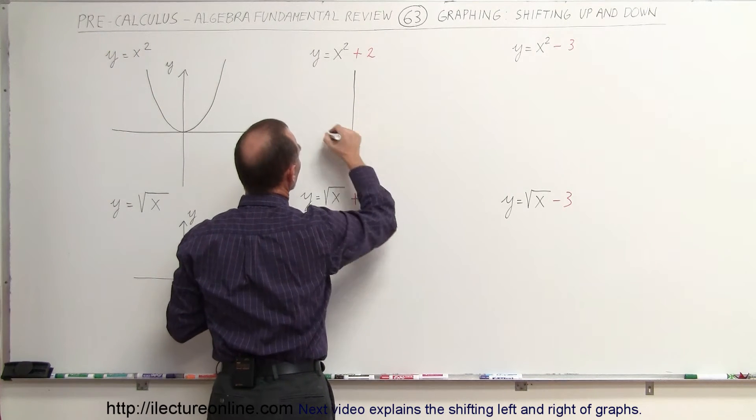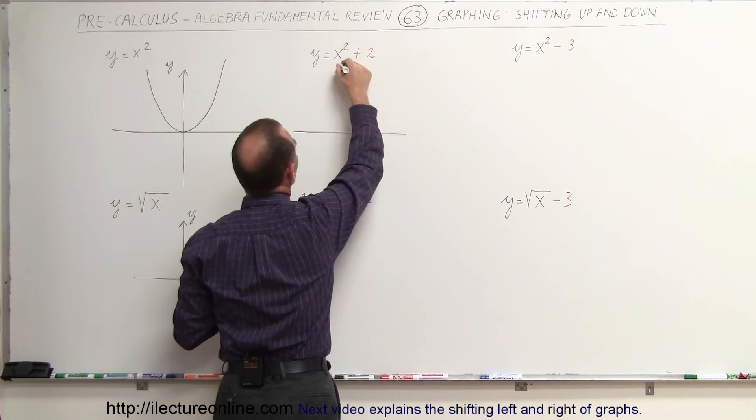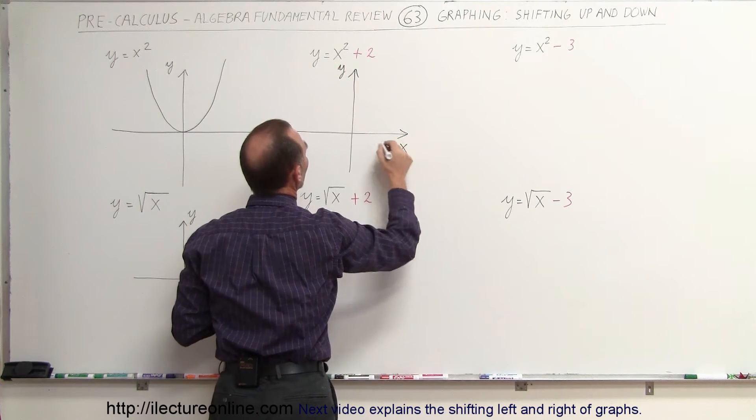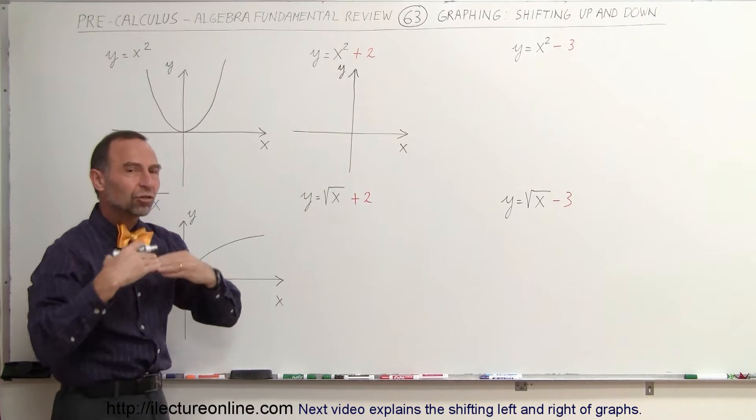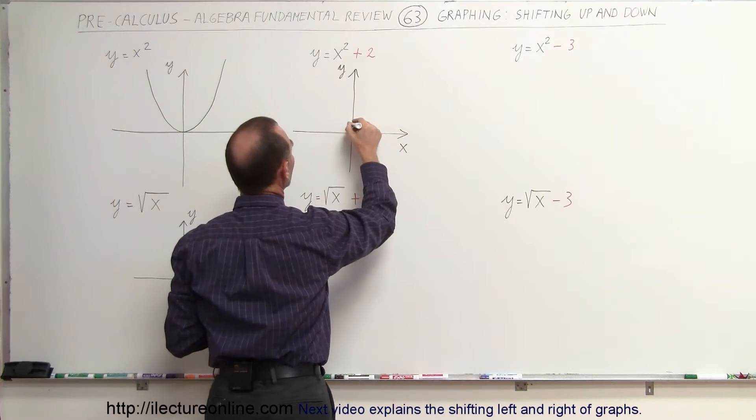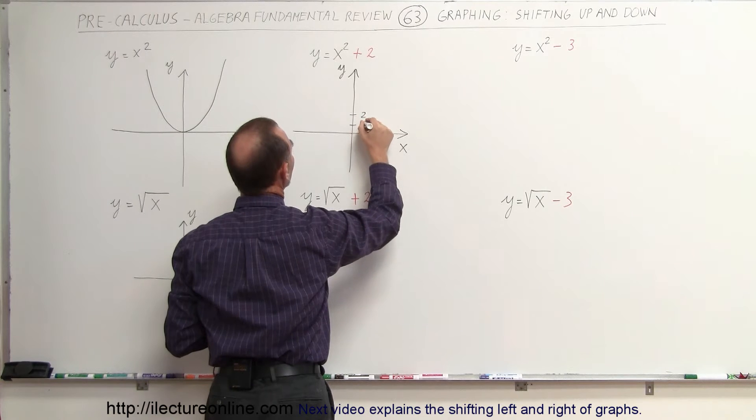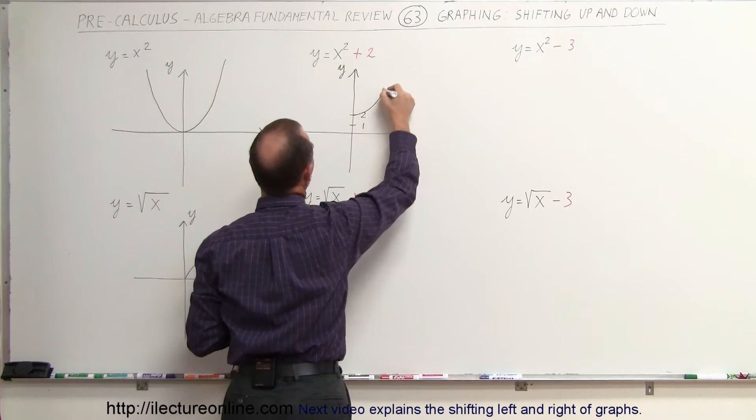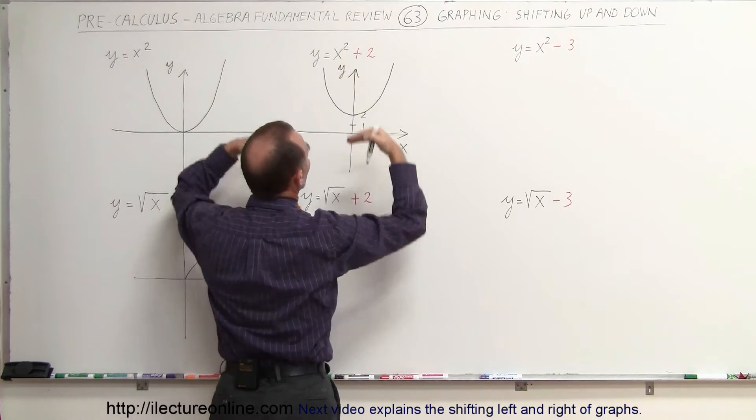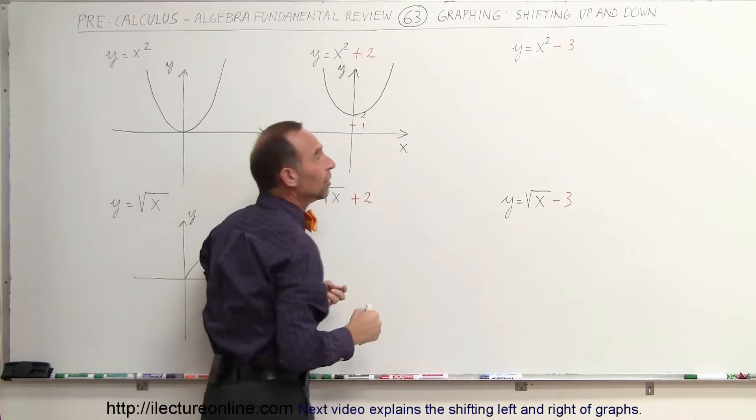So what that looks like, it's like this. So there's still your y-axis, there's your x-axis. Notice this would be your vertex right here of the original parabola, but now everything is shifted up 2 units. So you go up 2 units, and then you graph your parabola just like before. So actually, what happens is everything has been lifted up 2 units, and that's what plus 2 means.